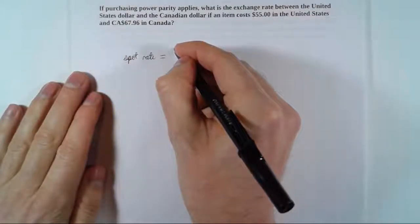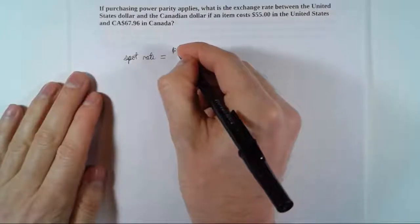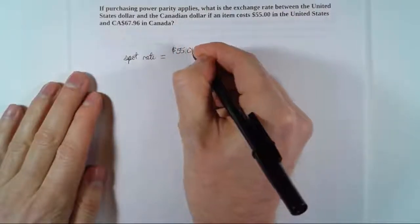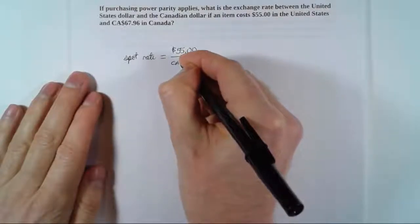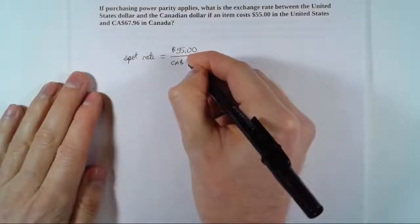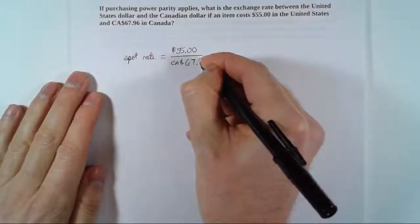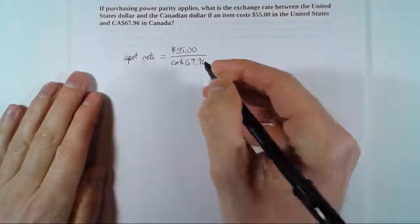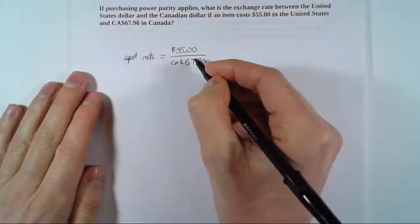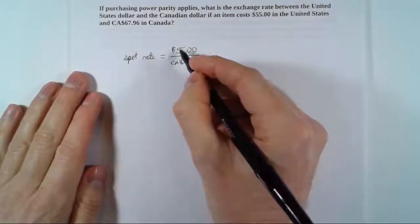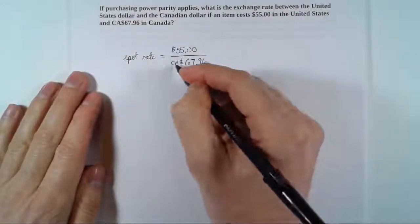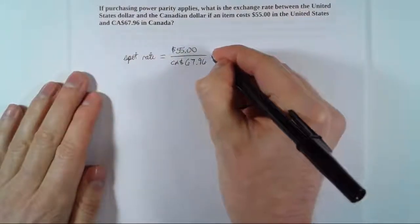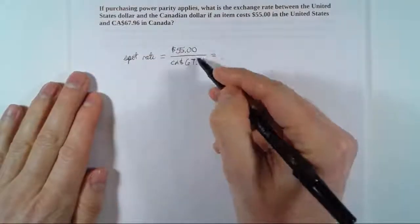So this particular item costs $55 in the US, and in Canada using Canadian dollars it costs $67.96. So all I have to do is do the ratio of these two prices. So $55 over the $67.96 in Canadian dollars, and then I just have to divide this out.